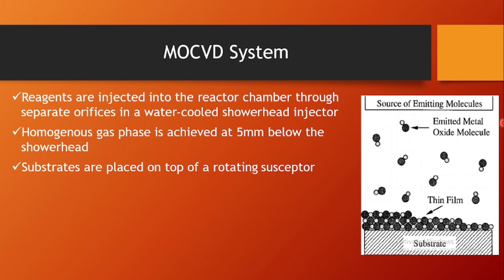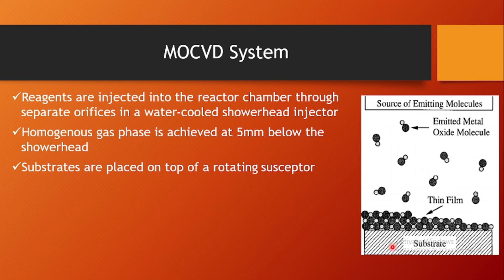The substrates are placed on top of a rotating susceptor which is resistively heated. As in the CVD technique, the substrate is heated from below, creating a temperature difference that helps in formation of the thin film. The substrate holder — the susceptor — rotates and is heated using resistive filaments.